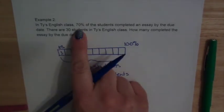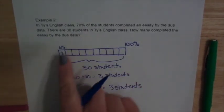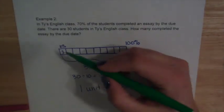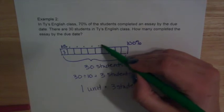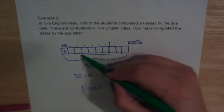Now to find 70%, we need to find 7 of those boxes. So we would be looking for 1, 2, 3, 4, 5, 6, 7. This 70% right here.